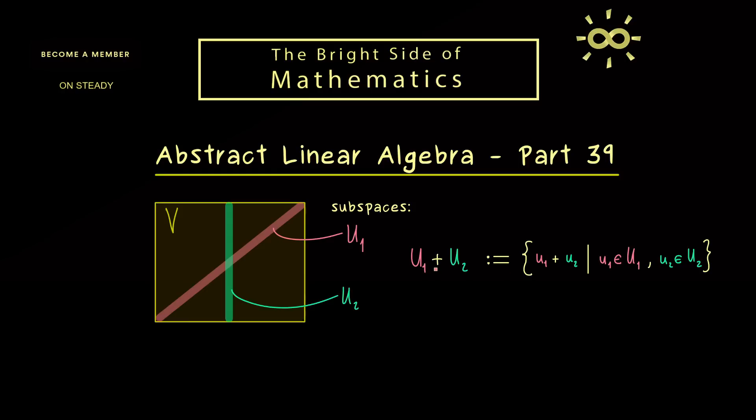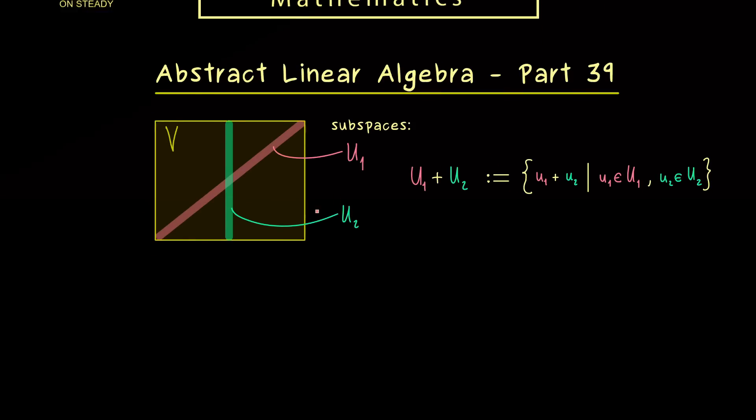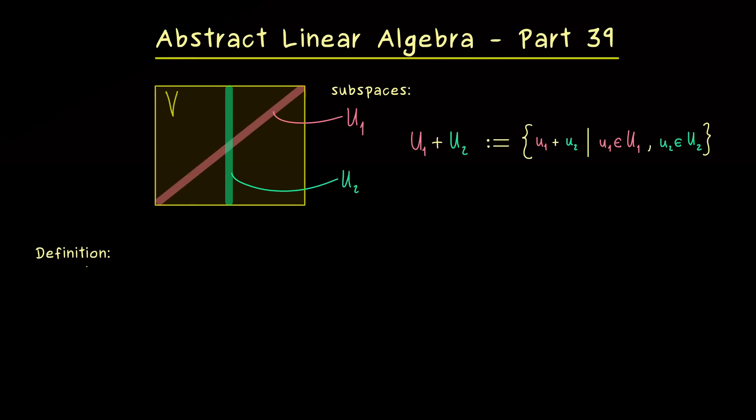And the common name for that is to write U₁ plus U₂. And please note, this is a notation one also uses if we consider just subsets in V. However, in this case, we also only would get a subset out. In fact, for subspaces, we can say a lot more. And for that reason, we put this into a new definition.